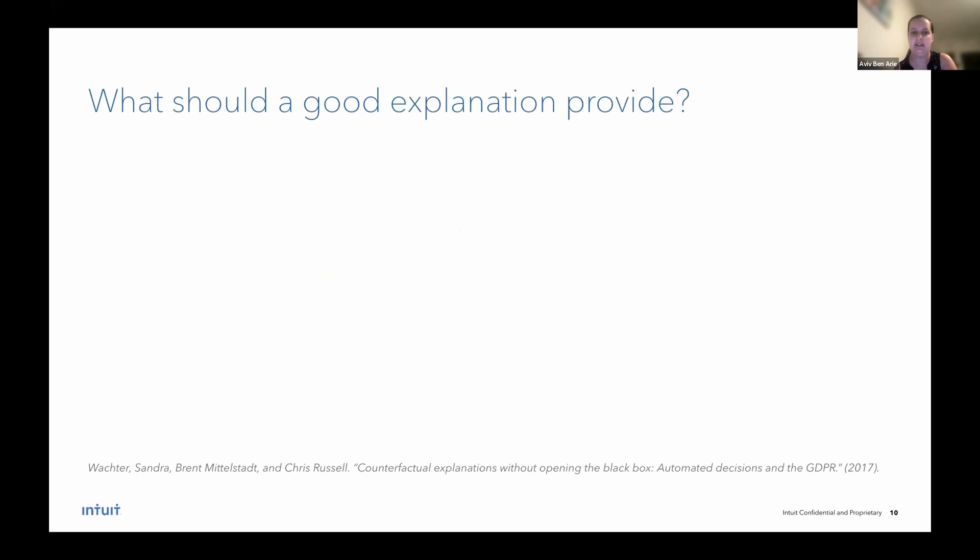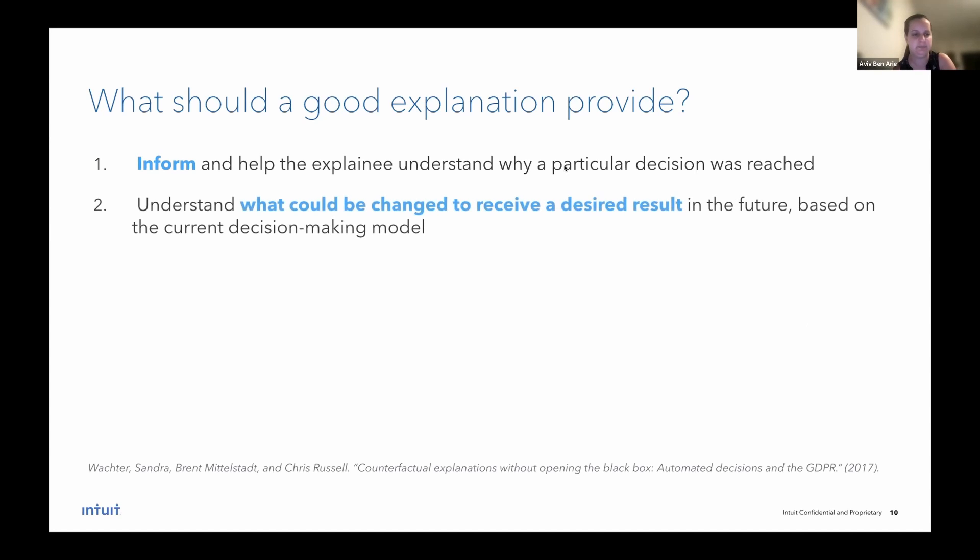So I hope you understand why being able to explain model predictions is important, but let's try to think what should a good model explanation provide. And this slide is based on a paper from 2017, which we'll revisit later on. So this paper claims that there are two important aspects. One is to inform and help the explainee, which can be the data scientist, the analyst, the marketing person, and so on, understand why a particular decision was reached, or in our case, why did the model say that Sarah is very highly likely to churn? And the second aspect is that the user needs to be able to understand what can be changed in order to receive a desired result.